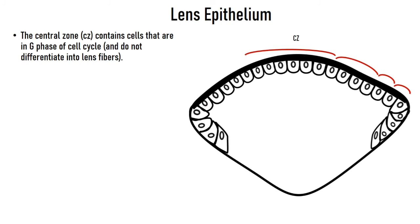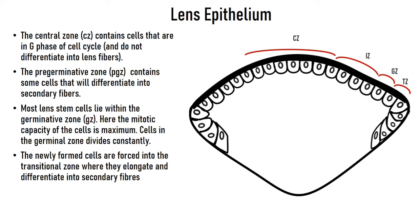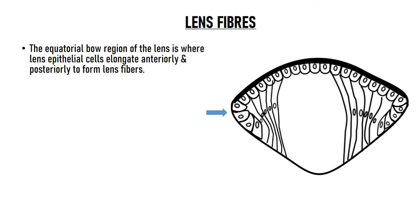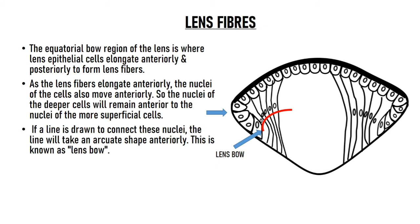The central zone contains cells in the G0 phase — stable, quiescent cells that do not differentiate into lens fibers. The pre-germinative zone has some cells that do differentiate into secondary fibers. Most stem cells lie in the germinative zone, where mitotic capacity is maximum. These differentiating cells are pushed into the transitional zone, where they elongate and differentiate into secondary fibers — a region also known as the equatorial bow region. As cells elongate into fibers, their nuclei shift anteriorly, and if a line is drawn connecting these nuclei it takes an arc shape, known as the lens bow.